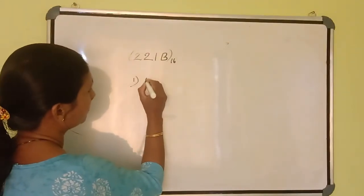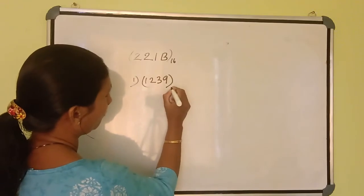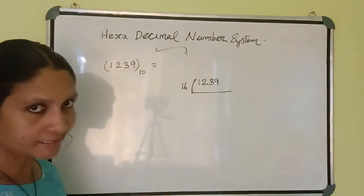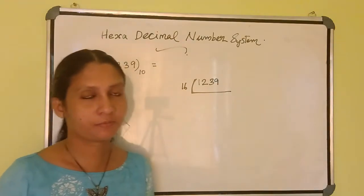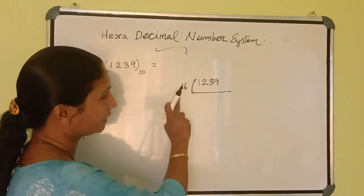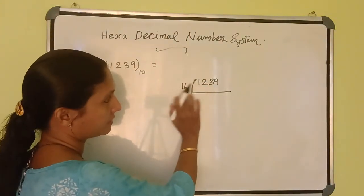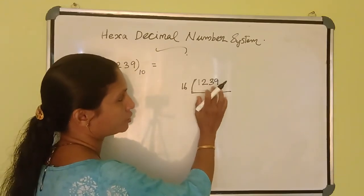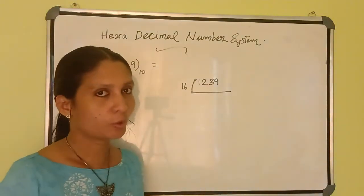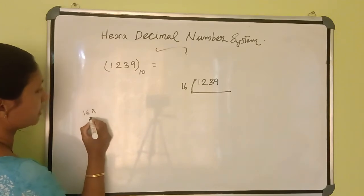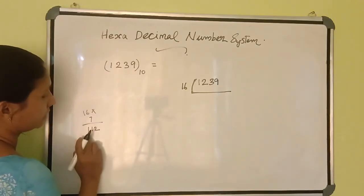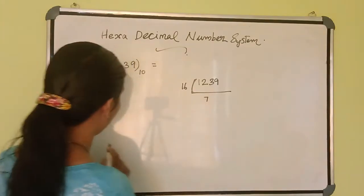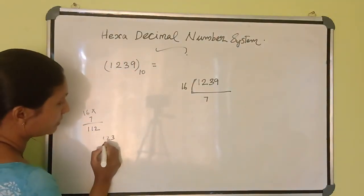I want to convert this decimal number to a hexadecimal number. I will show you how. We know 16 is the base of this number system, so we should divide this number by 16. I will take 123 — we can take 123. How many times will 16 go into 123? 16 into 7 gives you 112. Then you can write the answer: 7 times it will go. What is the balance? 123 minus 112 gives you 11.